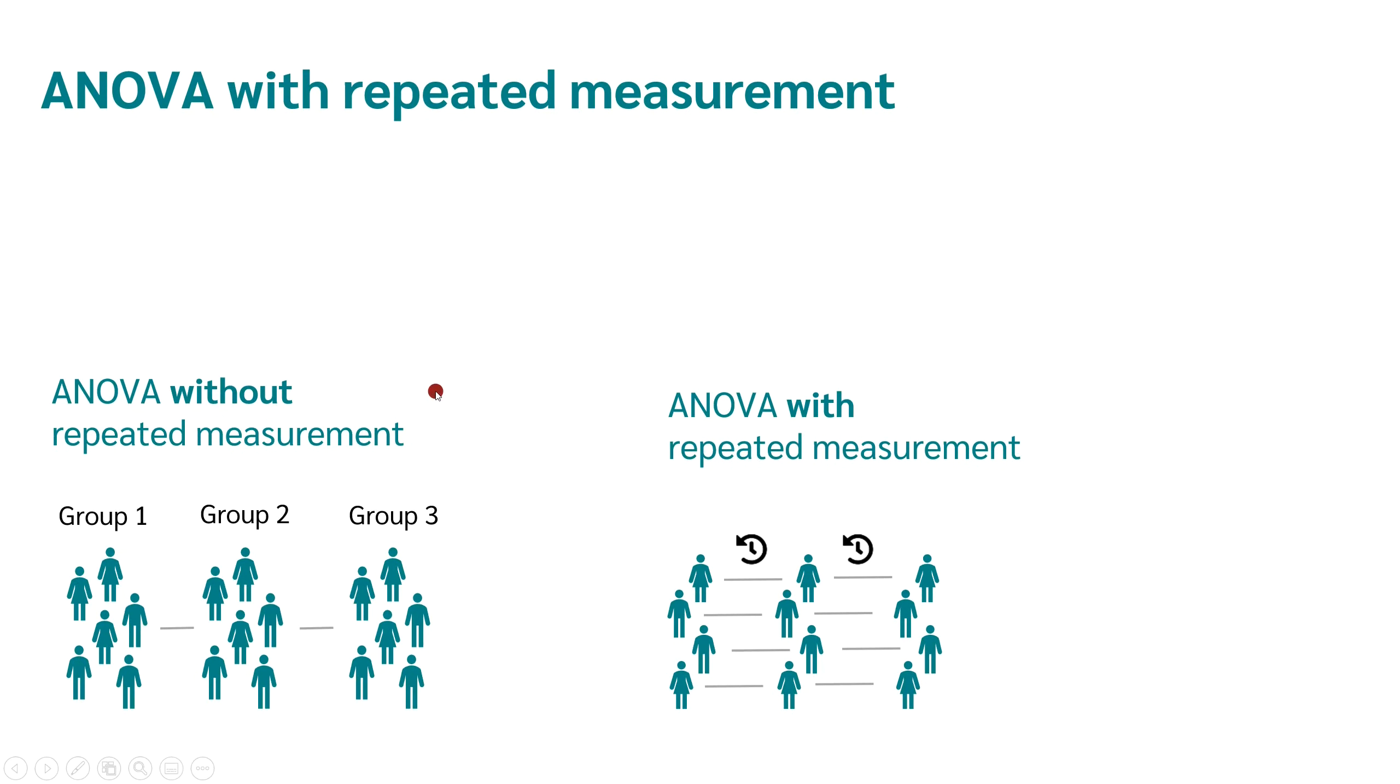If we have more than two dependent samples, we would use an analysis of variance with repeated measures. Now let's look at an example.